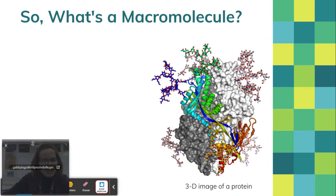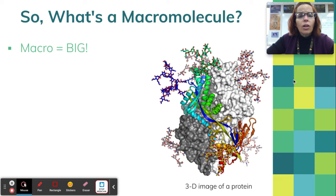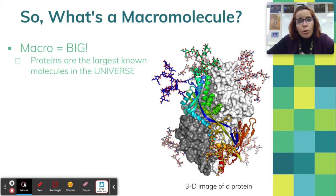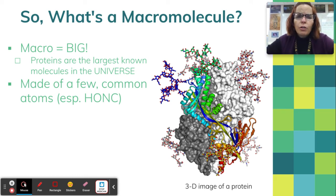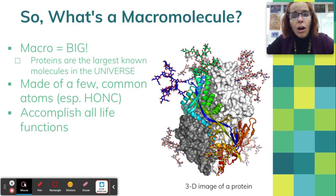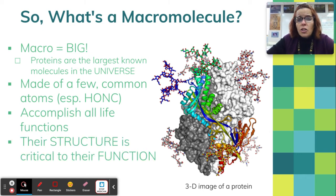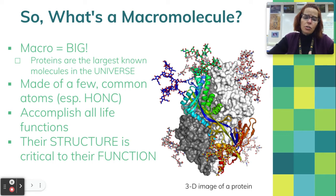So now let's actually talk about macromolecules. The prefix macro means big, so we're talking about a large molecule as opposed to micro. Proteins are the largest known molecules in the universe, and they happen to be here on planet Earth. They tend to be made of just four primary atoms: H, O, N, and C — though you will find phosphorus, sulfur, and selenium in some of them. They accomplish all of life's functions, and their structure is incredibly important. We're going to do a lot of looking at structure to make sure we can identify it, because structure determines function.